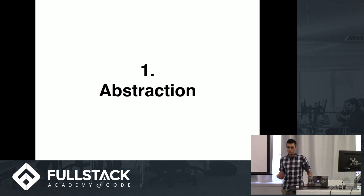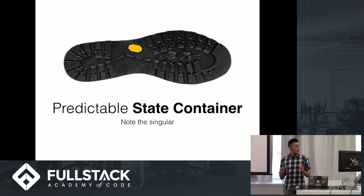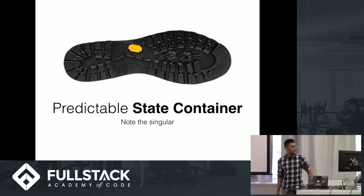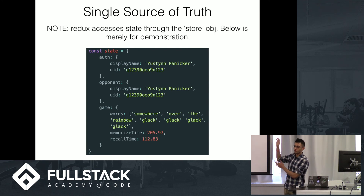It achieves this through two principles. One is the principle of abstraction, and the other one is the principle of immutability. In terms of abstraction, one thing is the state container itself — there's only one place where your state resides. It's a singular state container. You'll never have direct access to this; it'll actually be in something called a store, but essentially there's only one state object.